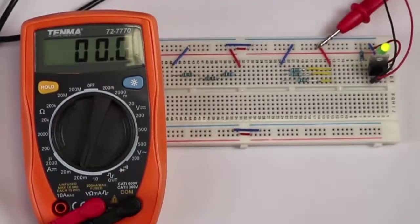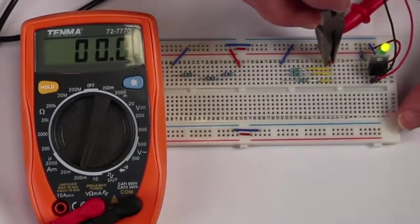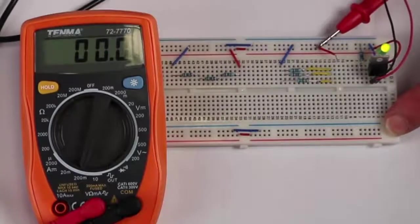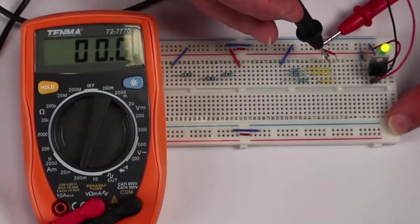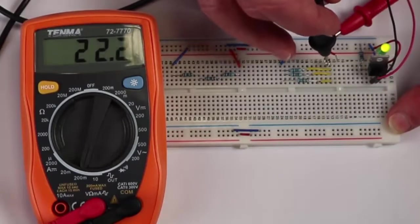To measure current we need to actually go into the circuit because current flows through components. We're going to place this link here with the meter and see what current is actually going in at this point. And we see it's 22.2mA approximately.